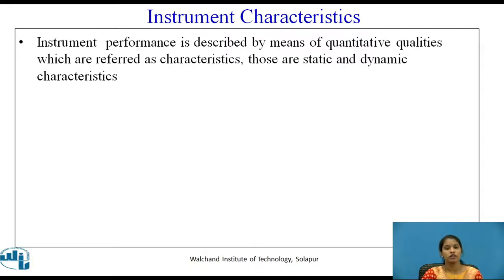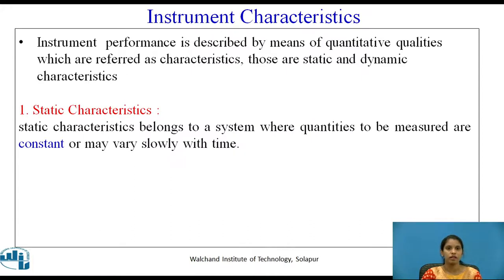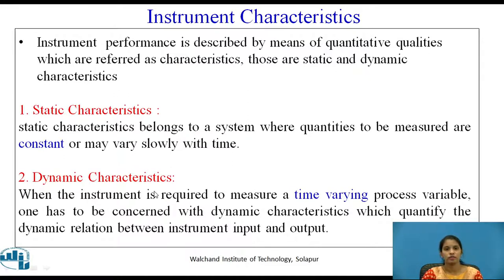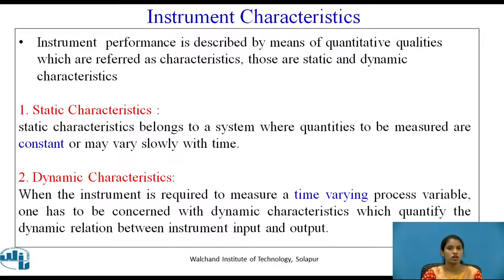Instrument performance is described by means of quantitative qualities which are referred to as characteristics. These are static and dynamic characteristics. Static characteristics belong to a system where quantities to be measured are constant or may vary slowly with time. Dynamic characteristics apply when the instrument is required to measure a time-varying process variable — when the process variable varies with respect to time, it must be described by dynamic characteristics, which quantify the dynamic relation between instrument input and output.